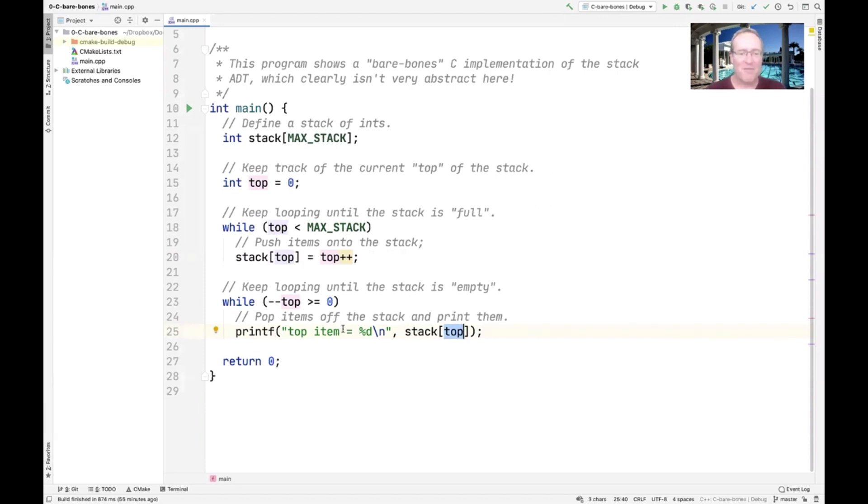Then go ahead and take the current top of the stack and print it using the good old variadic argument, very unsafe printf statement in C. So there are so many things wrong with this code. It's just astronomical.